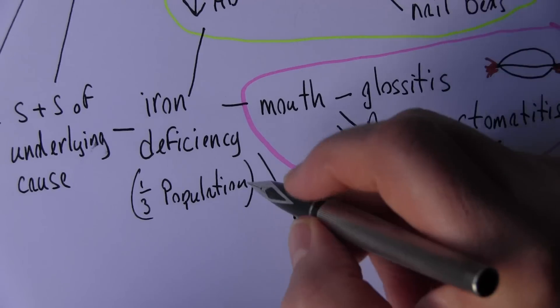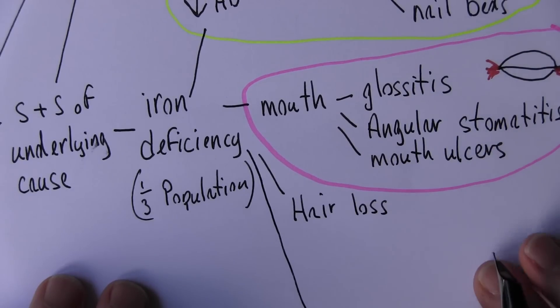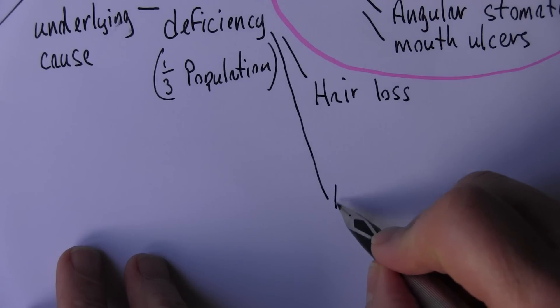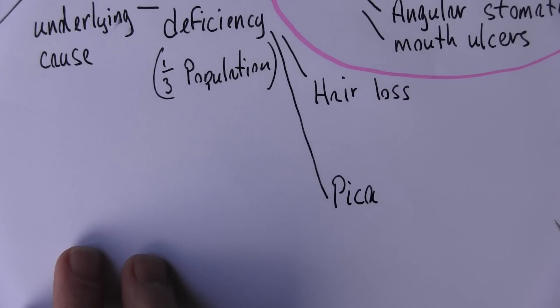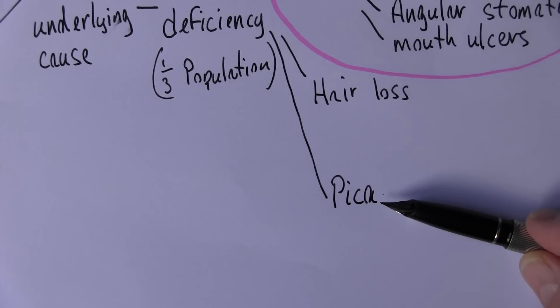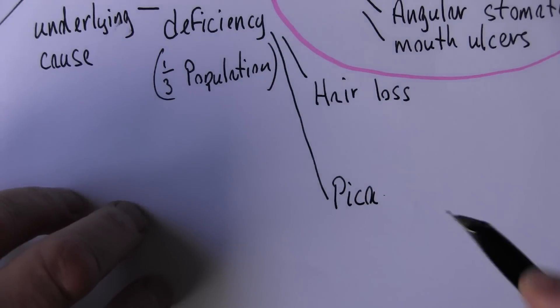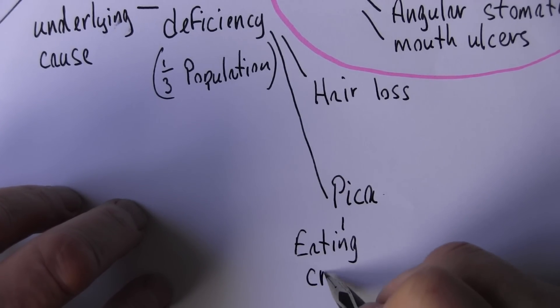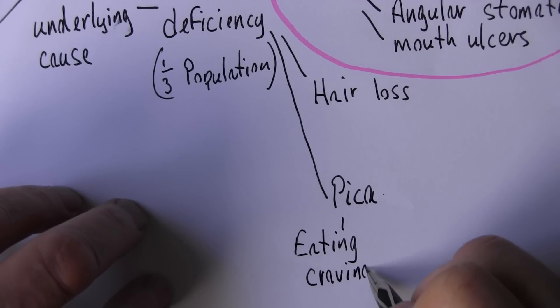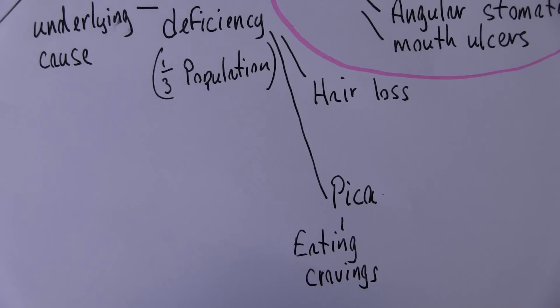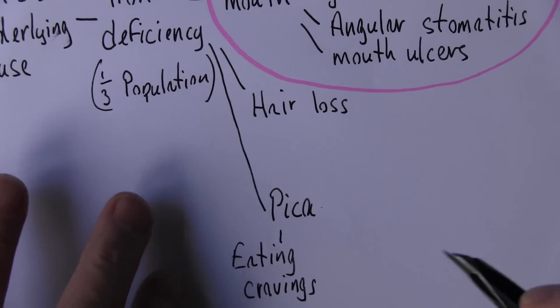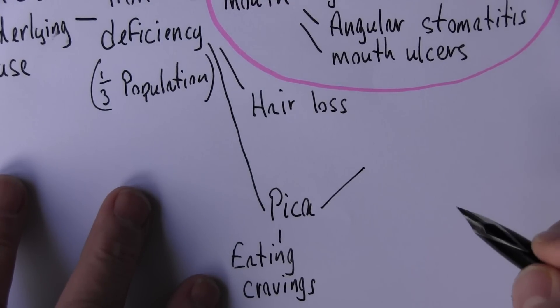Now another interesting feature of iron deficiency is called pica. Now if you've been pregnant or you're married to someone who's pregnant, you know about pica because it's the craving for different types of food. So it's an eating craving. You have cravings for foods. But in iron deficiency the pica is not really related to food. It's strange.